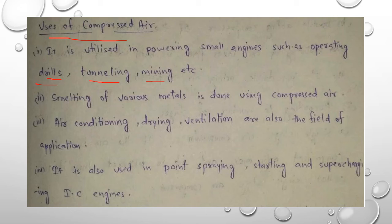Smelting of various metals is done using compressed air. Smelting means if an iron ore is there, iron material is there, to clean it we have to put air in high pressure than the atmospheric value so that it will be cleaned easily.